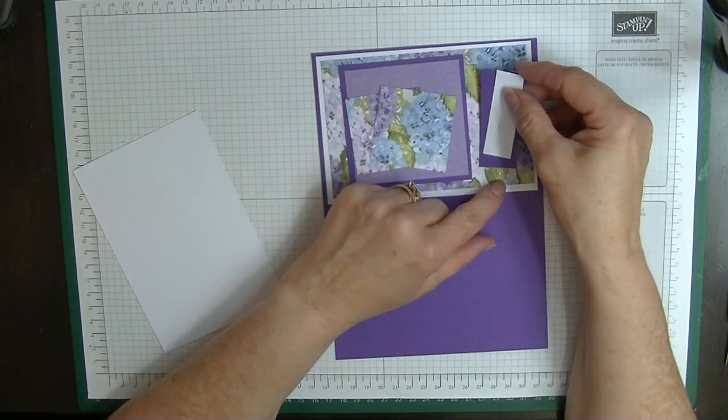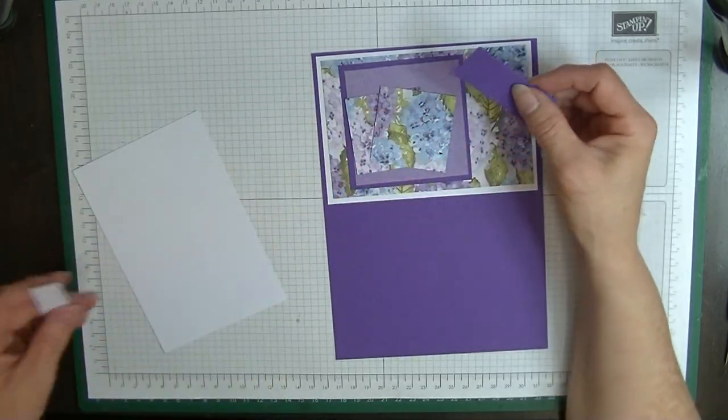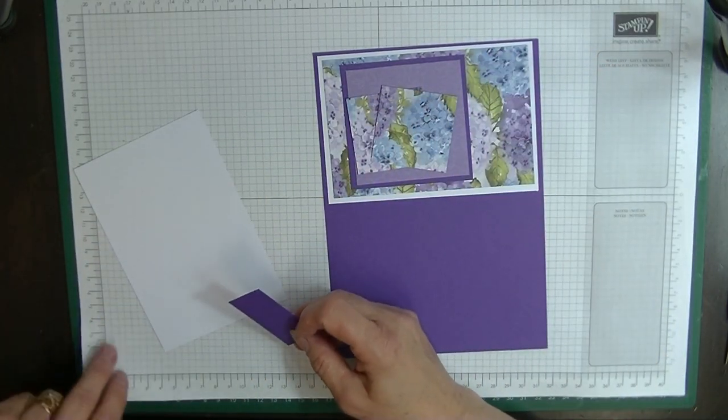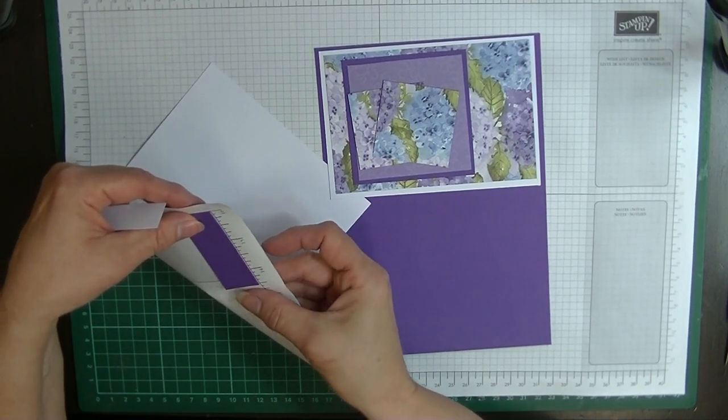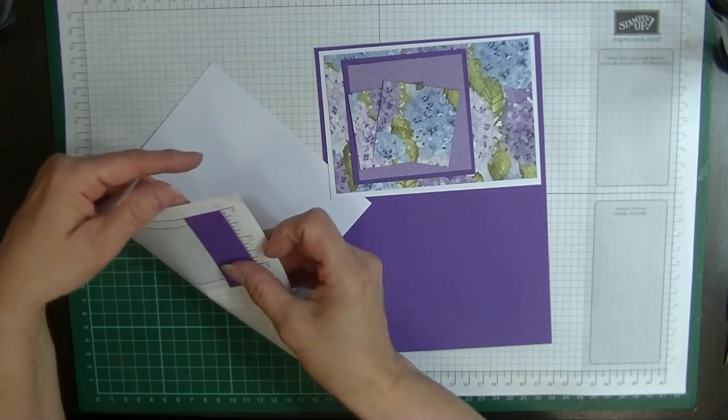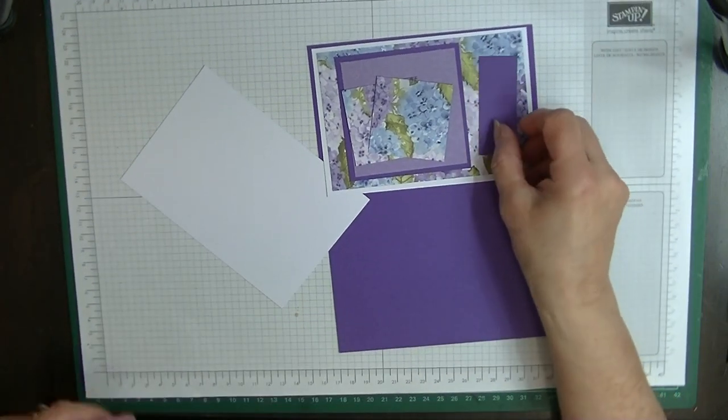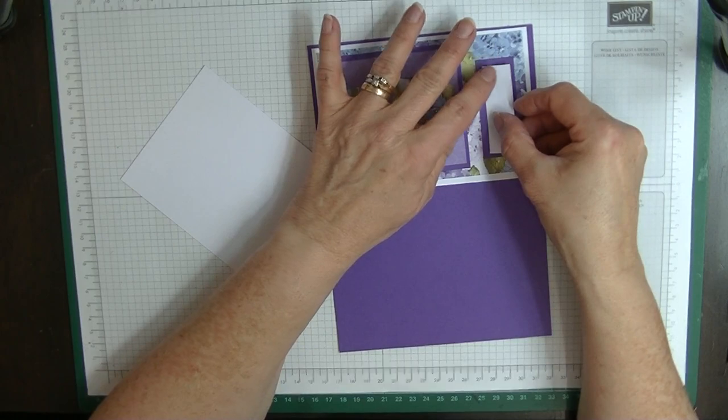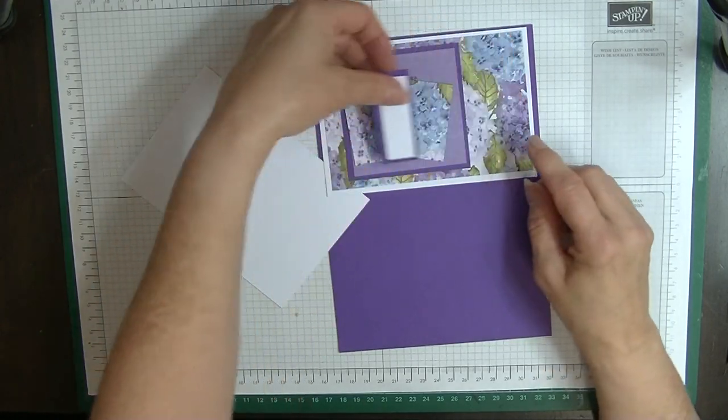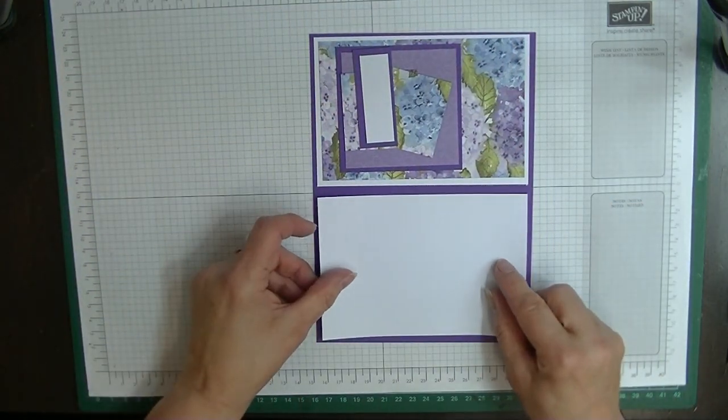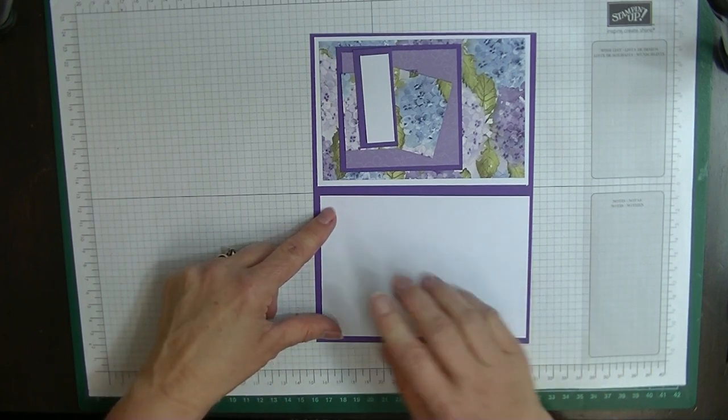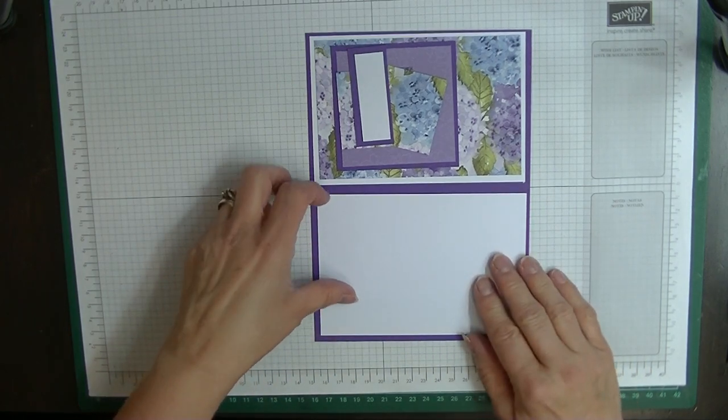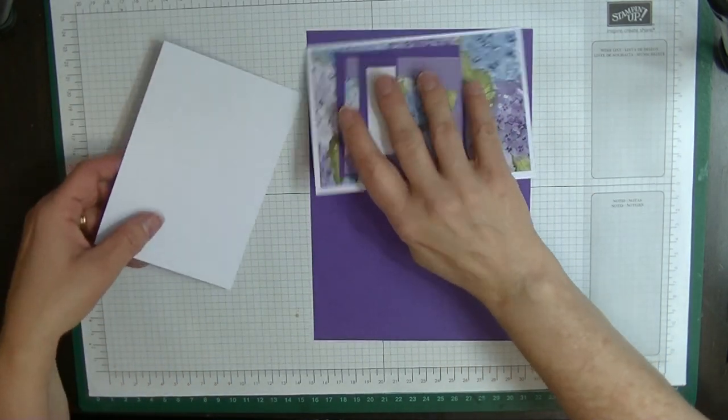This is my tag that I'm going to put down here and this piece measures two and a half by one, so that means this one is two and a quarter by three quarters of an inch. For my insert, my piece measures five and five eighths by three and seven eighths. Let's get stuck in.